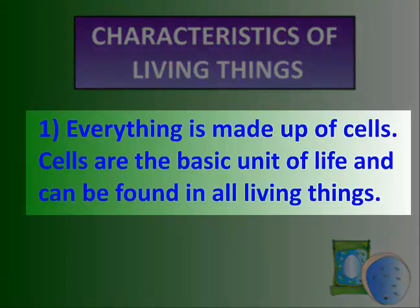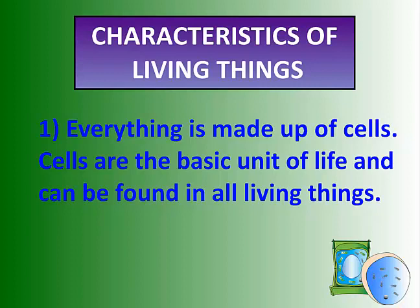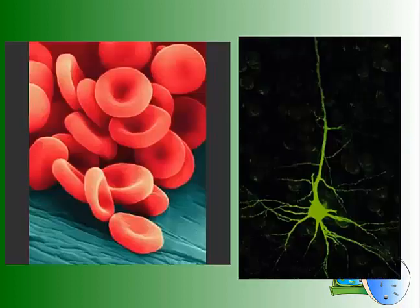Characteristic one: everything is made up of cells. If it's alive, it's made up of cells, and we call cells the basic unit of life. They can be found in all living things. Within our human body, two examples might be red blood cells, as pictured on the left, or a neuron — a brain neuron — pictured on the right. Each cell has a very specialized function. We'll get more into that later in this unit.